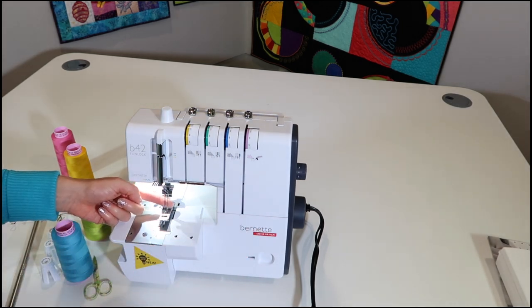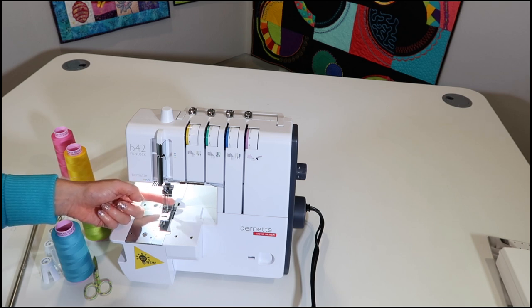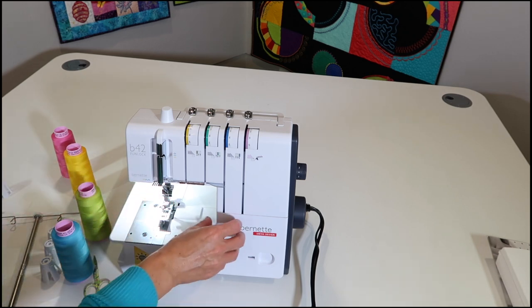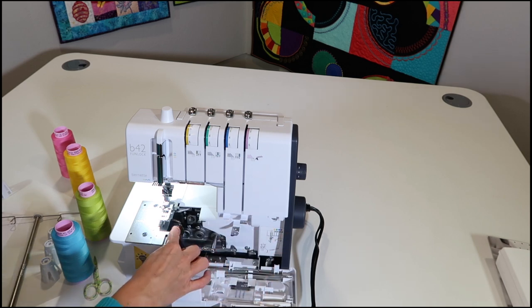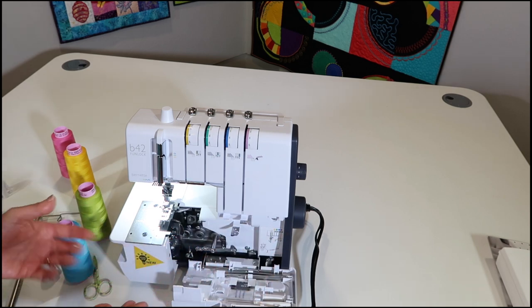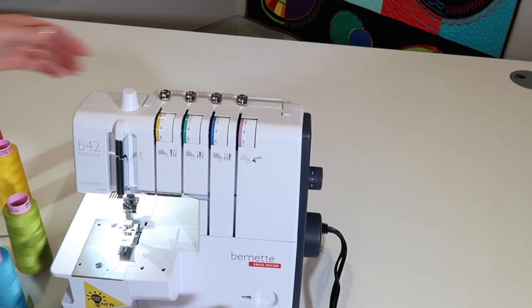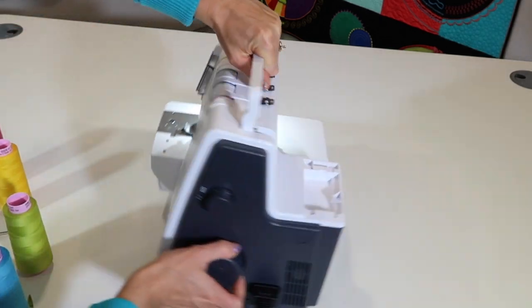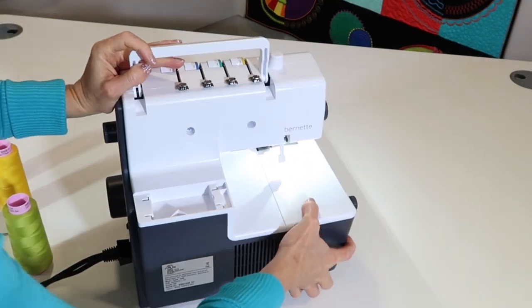We are going to thread up originally with all three needles, which are currently in the machine. Then down below, there is one looper we'll be threading, and everything's color coded. If you have just opened up your machine, it might look a little naked back here, so I just thought I'd come around to the back.